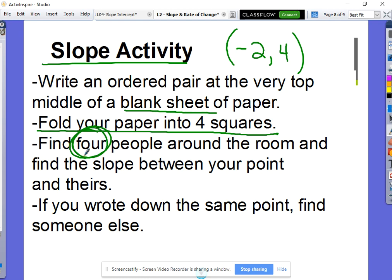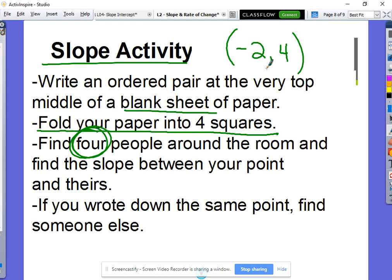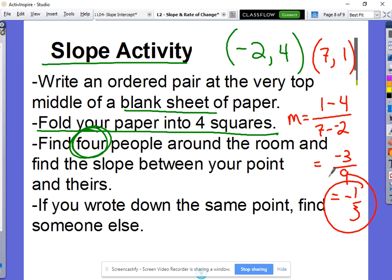Now if you can, your goal is to find four different people to then find the slope between your two points. So let's just say that my point obviously is (-2, 4). Let's find, let's say I find my friend Alexandria and her point is (7, 1). So it's going to be my job to find the slope between these points. So I would come over here and I'd do 1 minus 4, and then I would do 7 minus negative 2. Simplify that gives me negative three over positive nine, which simplifies again to negative one third. And that would be my slope between my two points.